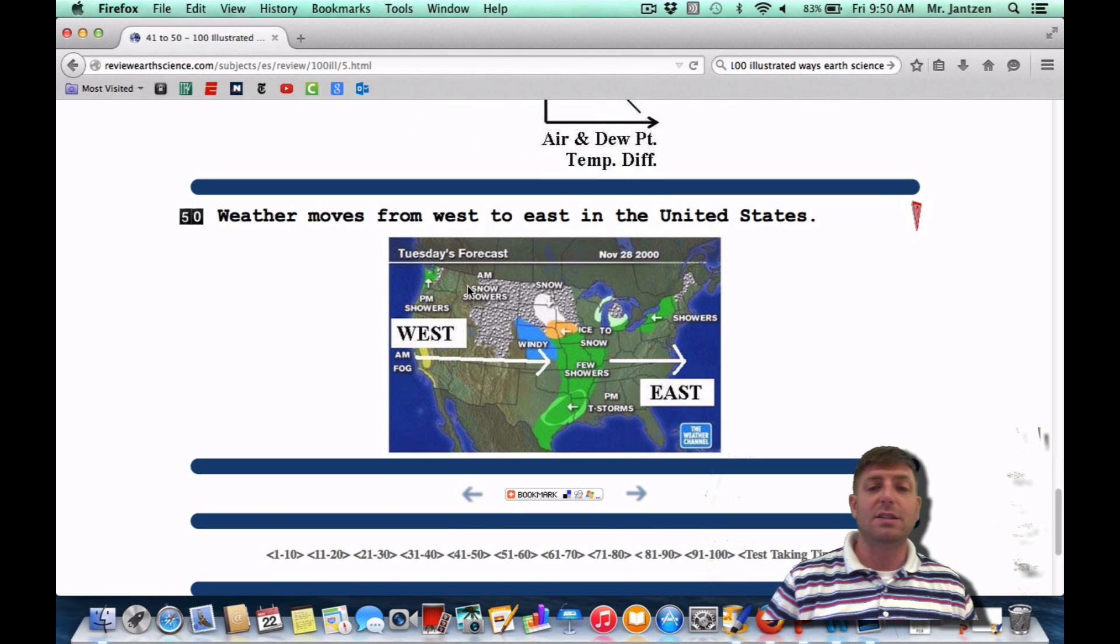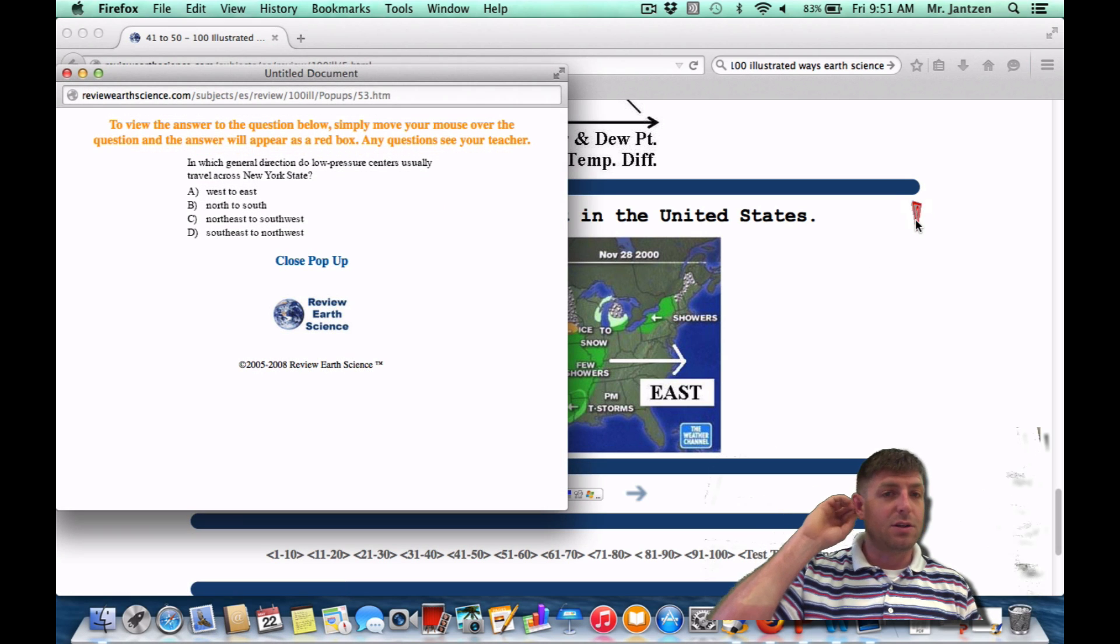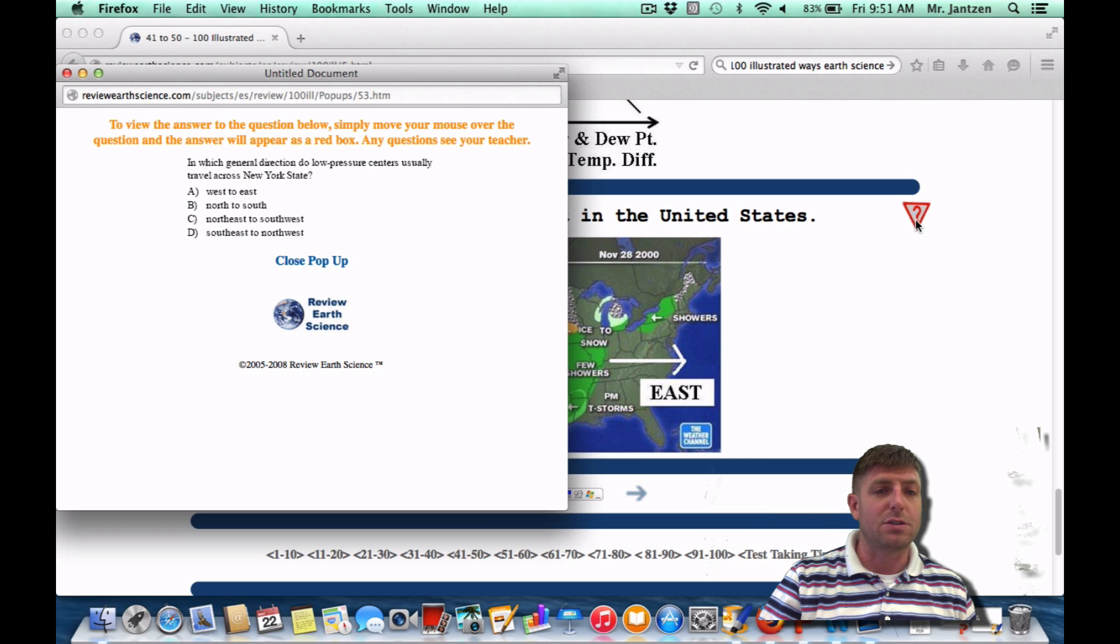Number 50, weather moves from west to east in the United States. The jet stream moves all the weather from west to east. These arrows are kind of indicating a straight across. Sometimes there's a slight dip in the west to east movement. Maybe it becomes more of a northwest to kind of a northeast kind of movement. How it might appear in the regions is: in what general direction do low pressure centers usually travel across New York state? Across New York state, you're going from the west to the east or choice A.